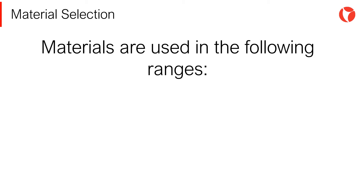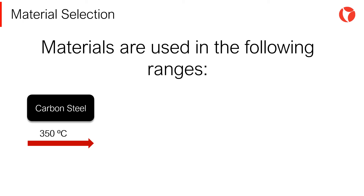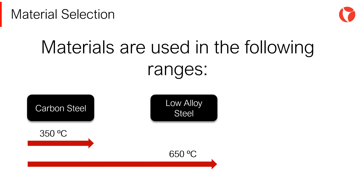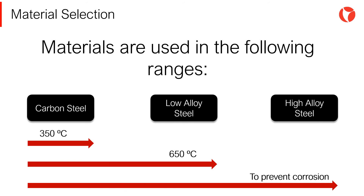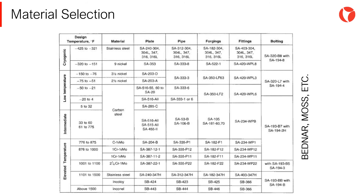Depending on the design temperatures of equipment, a particular material will be selected that can withstand the maximum temperatures prevailing in the process. As a general rule, materials are used in the following temperature ranges: up to 350 degrees, carbon steel; up to 650 degrees, chromium-molybdenum alloys; and to prevent corrosion, high alloy steels, most commonly known as stainless steels. In addition, there are guides such as the one from the Dennis Moss pressure vessel design book, which recommends materials for different working temperatures.